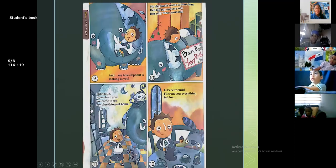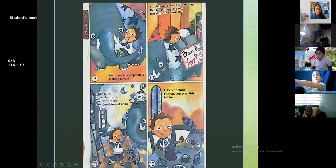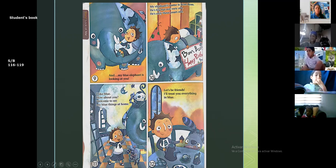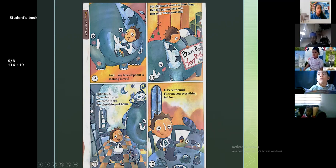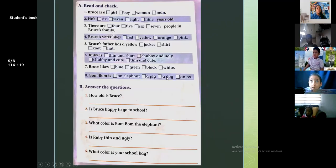Y mi elefante azul está mirándote. El nombre de mi elefante es Boom Boom. Él es grande pero no muy viejo, solamente tiene tres años. Me encanta el azul, qué hay de ti? Ven a ver, bienvenido a ver mis cosas azules en mi hogar. Seamos amigos. Yo voy a compartir contigo, voy a mostrarte todas mis cosas azules. Todo te voy a mostrar todo a ti en azul.